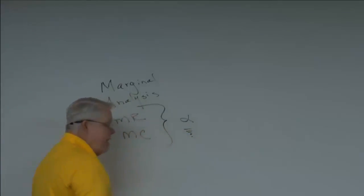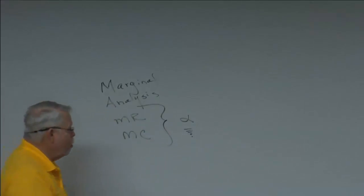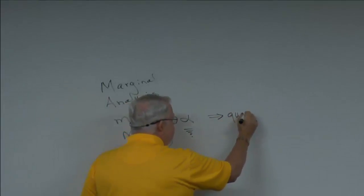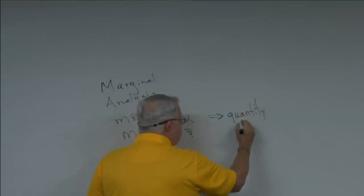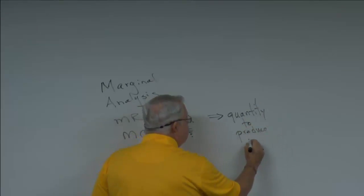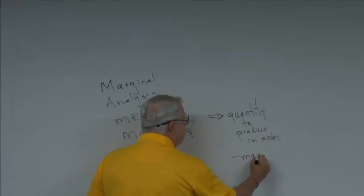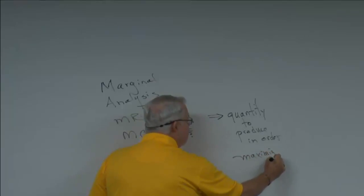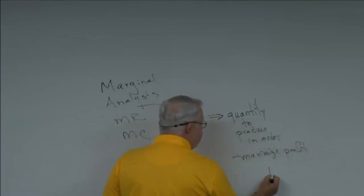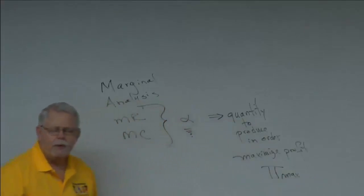Every time you look at a graph, I want you to get in the habit of locating point alpha. Alpha tells us the correct quantity for the firm to produce — the quantity to produce — and this is assuming that they want to maximize profit. My symbol for profit is pi; maximum profit I write as pi max.